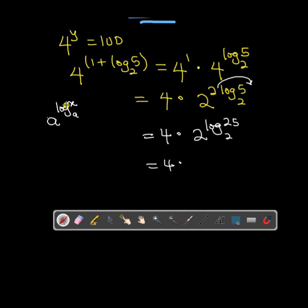what we have there is that this log a base a will cancel, so you just have x. In other words, this guy will cancel and just give us 25.